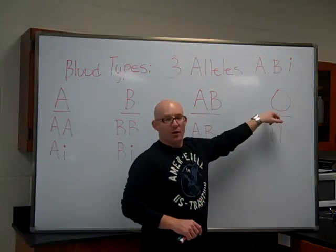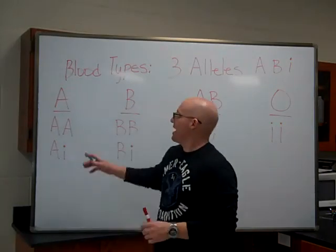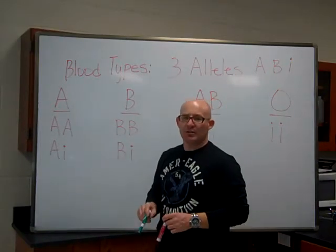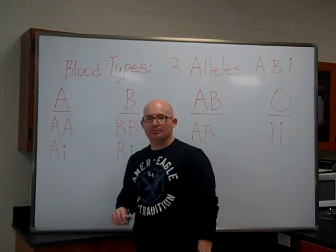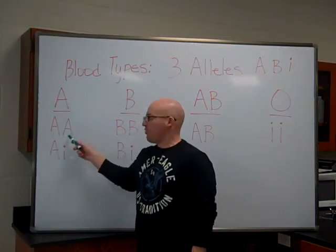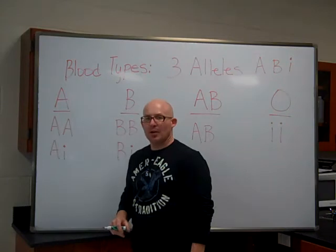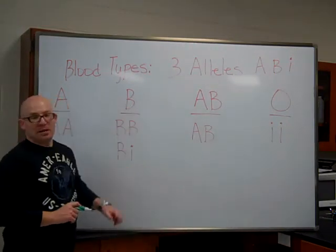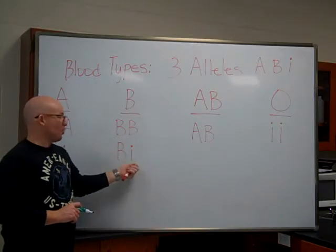If we have three alleles, we have some different combinations we can look at. If you have type A blood, there are two possible genotypes: you could be big A, big A, or you could be big A, little i. A is dominant, so having one copy of the A allele gives you type A blood — it's dominant over the O allele. If you have type B blood, you could be big B, big B, or big B, little i. The B is dominant over the O allele, which is little i.